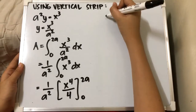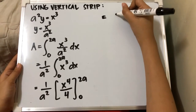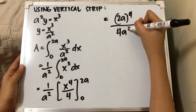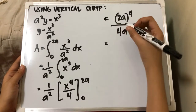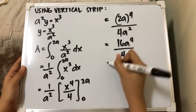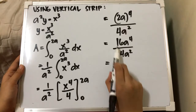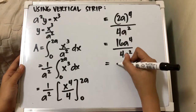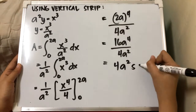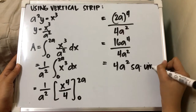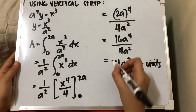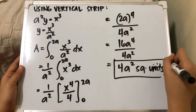Substituting the limits: (1/a²) × [(2a)⁴/4 − 0] = (1/a²) × (16a⁴/4) = 16a⁴/(4a²). Simplifying, 16/4 = 4 and a⁴/a² = a², giving us 4a² square units. So the area of the region is 4a² square units.